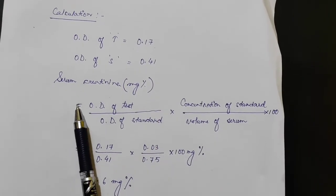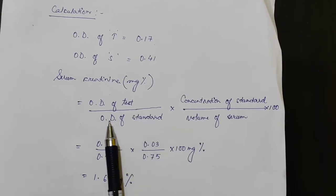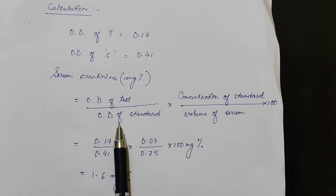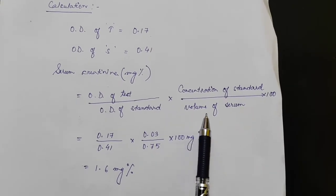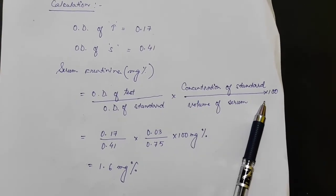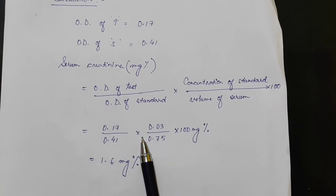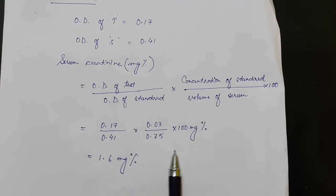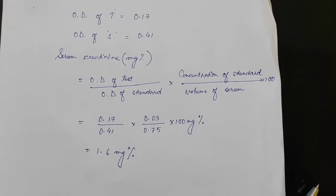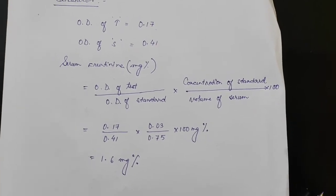So, using the formula serum creatinine equal to optical density of the test divided by optical density of the standard into concentration of the standard divided by volume of serum whole into 100. After substituting the value, we get 1.6 mg% as the value of serum creatinine in the given sample.